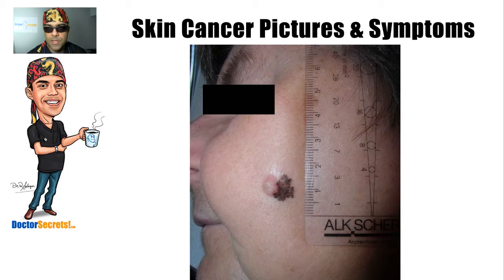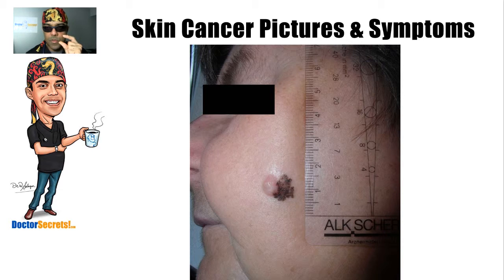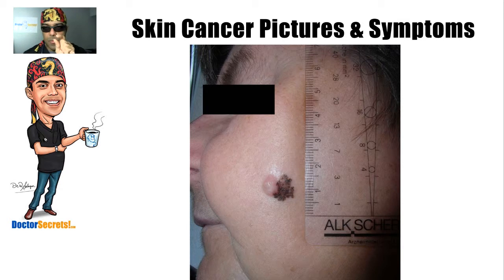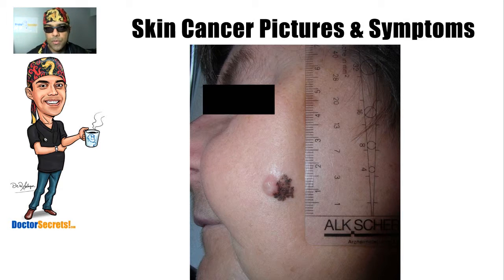If the lesion looks like it needs more than a punch biopsy — something larger — I'll usually refer the individual to someone in plastics or dermatology. When doing a biopsy for a larger lesion, they don't just want a core sample; they want to cut out the cancerous tissue plus some of the normal skin surrounding it. This is called a wide excision — you don't just remove the ugly part, you take out some normal skin around it too. For those bigger procedures, I'll refer on to a plastics or dermatology specialist.